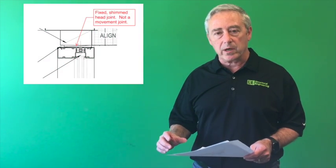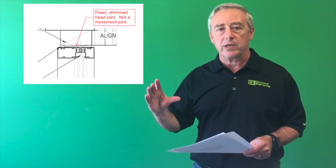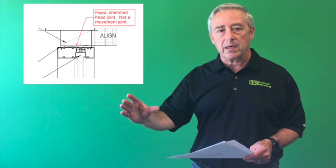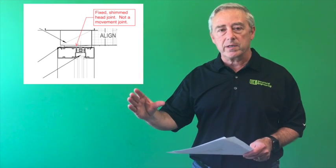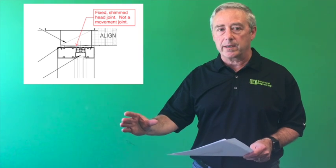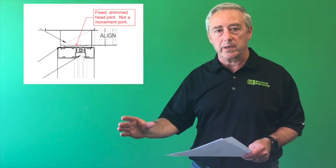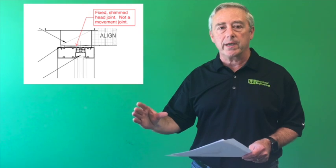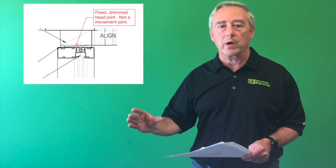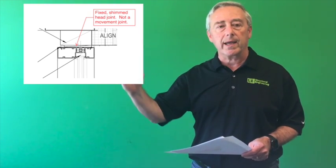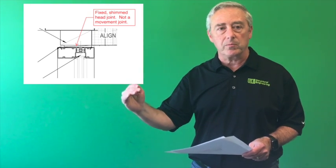And so this is what it looks like whenever we have a joint at the head of a storefront system that is inappropriate for building structural movement. This type of joint is a fixed type of joint. It doesn't allow for any building structural movement to occur.